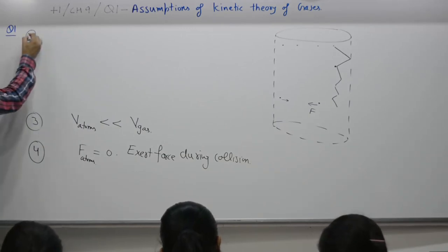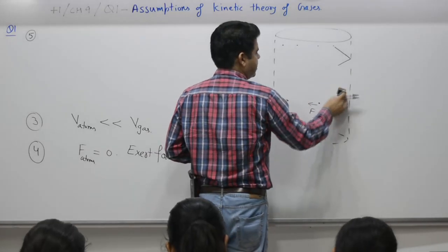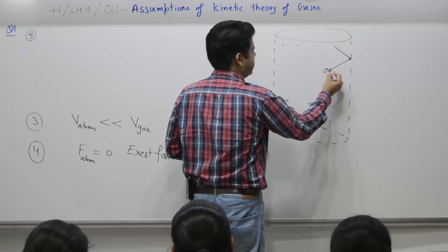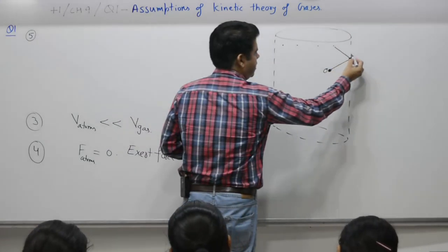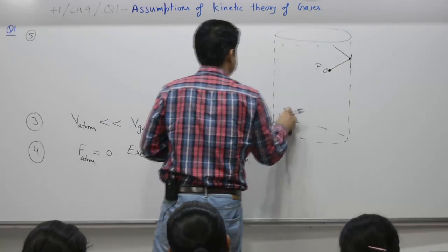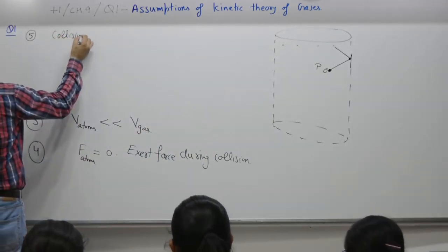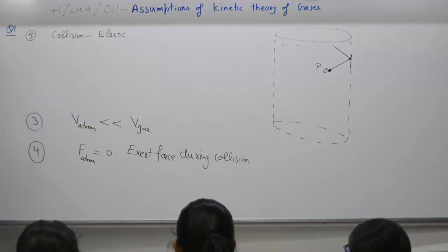Point number 5 deals with collisions. Collisions with what? A particle can have a collision with another atom, number 1, or with the wall, number 2, with another atom. With the wall or with another atom, collision. This collision will be of what type? Yes, elastic. Collision with the wall or collision with another atom, it is elastic.